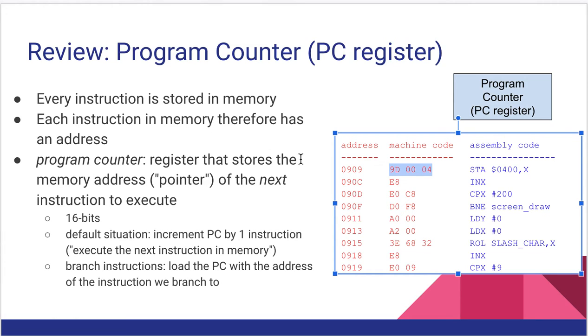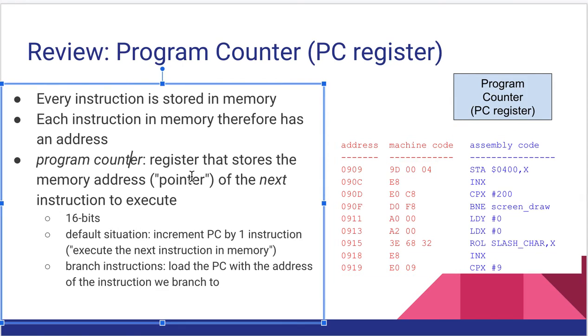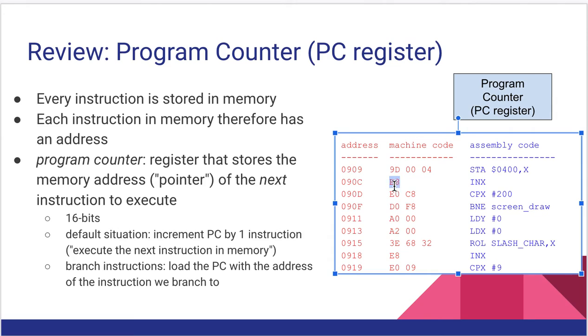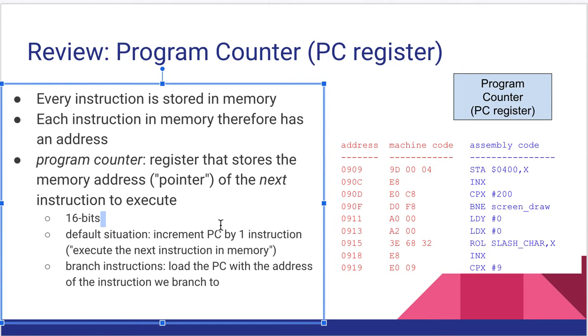So each instruction in memory, therefore, has its own address unique to that instruction. The program counter stores the memory address of the next instruction we're going to execute. So because it holds an address, it is 16 bits long, and it's the only 16-bit register in the 6502 architecture. The default situation is if we're going through our program instruction by instruction by instruction by instruction one after the other all the way down the page, the default situation is the PC gets incremented by one instruction every time. Now note that one instruction may not be a single byte. As we see over here, some instructions are three bytes long, some are single byte long, some are two bytes long. So the PC gets incremented by the number of bytes it needs to go to the next instruction. This is if we're simply going down the page in a linear fashion.